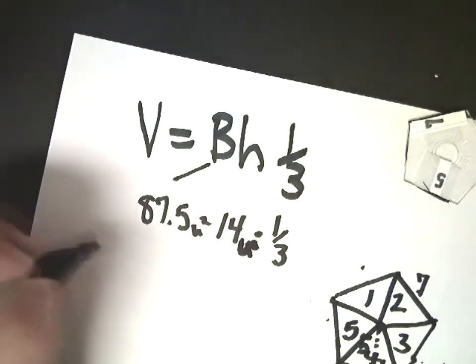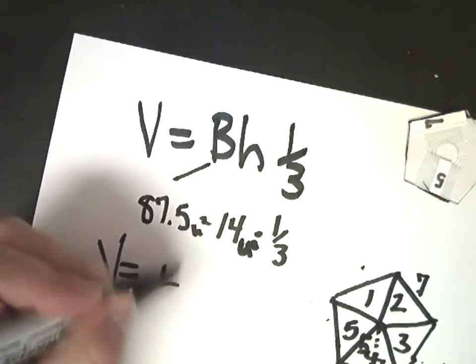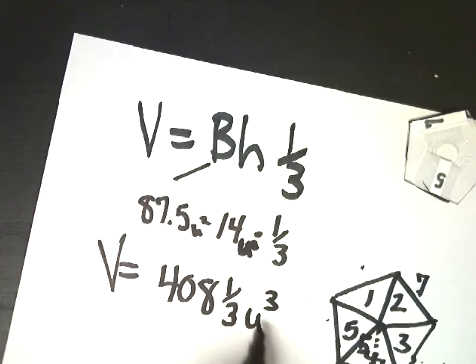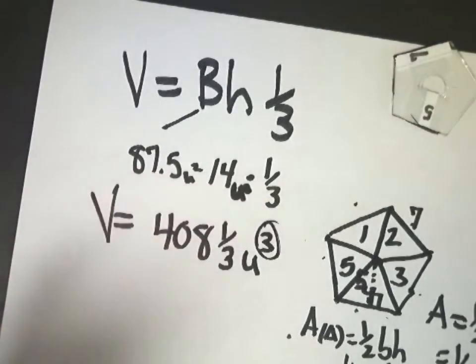So I'm going to work this out. So I do 87.5 times 14 times one-third. And it gives me a final volume of 408 and one-third units cubed. And it's a cubed measure here because it's a three-dimensional figure. So this represents how many dimensions are in the figure most of the time with units. So there it is.